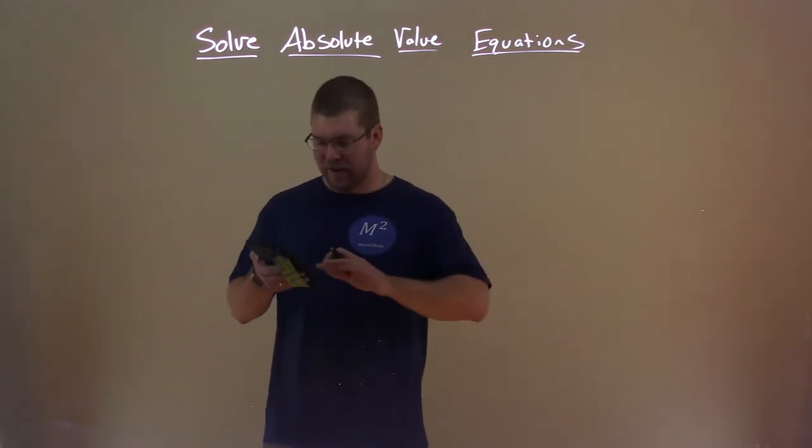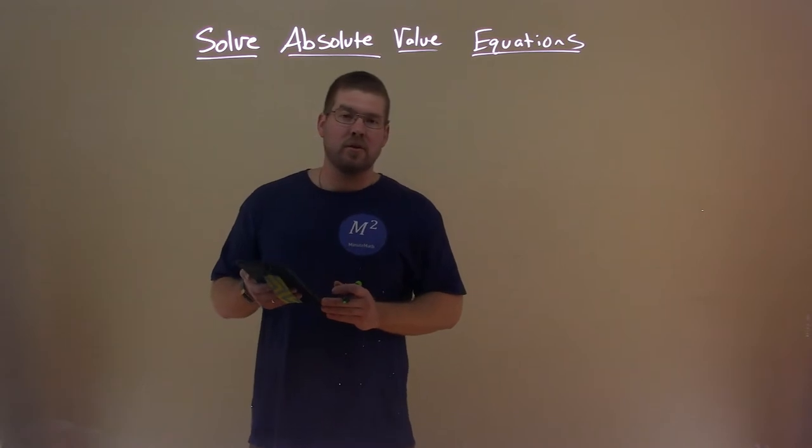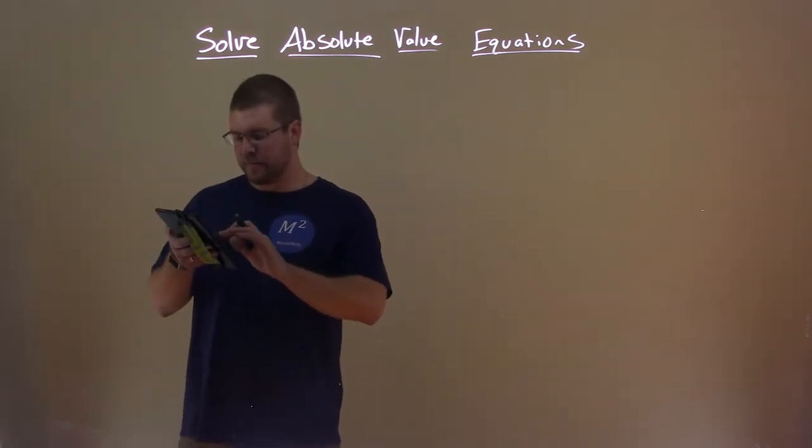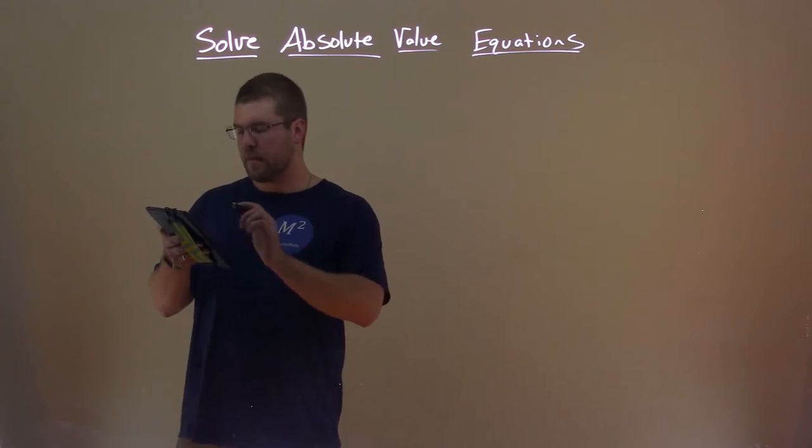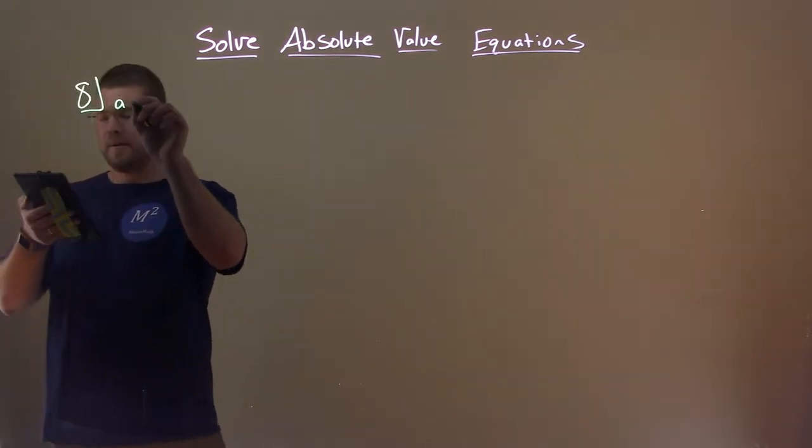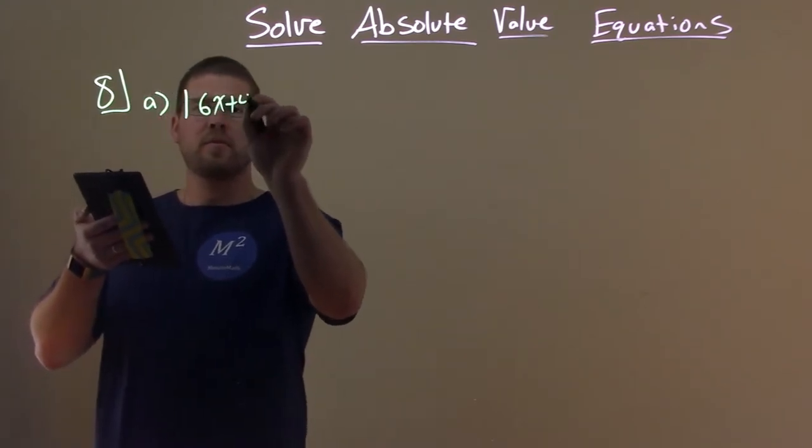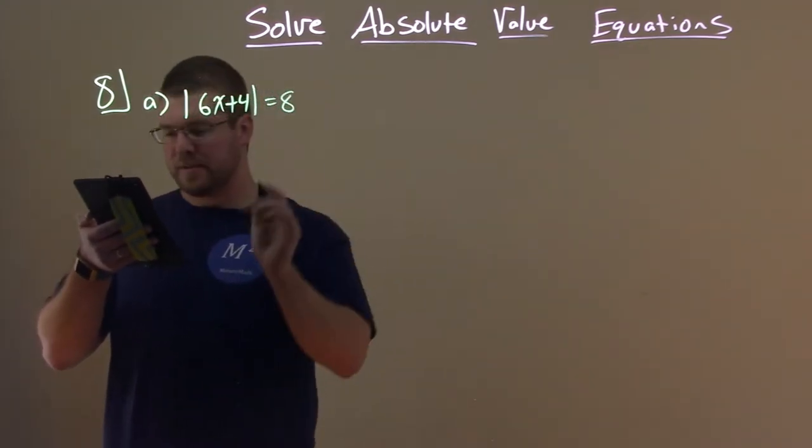Now that we got that definition out of the way, let's just learn by doing. Let's solve some examples here. Example eight, we're going to do a couple of these. Part A: Absolute value of 6x plus 4 equals 8. All right.